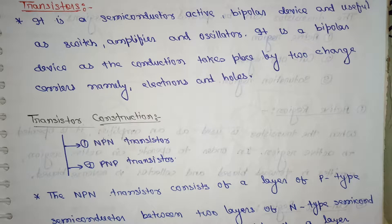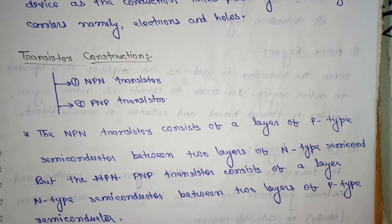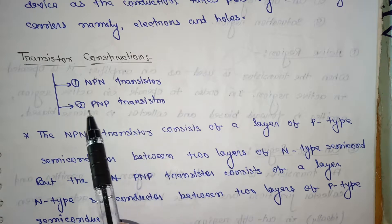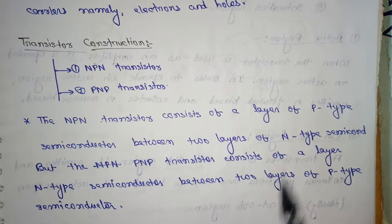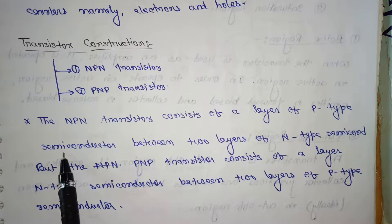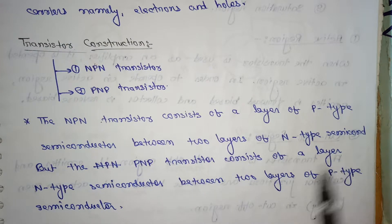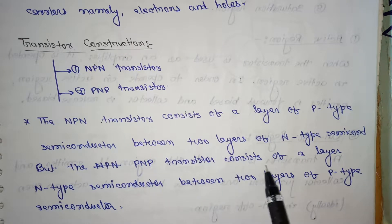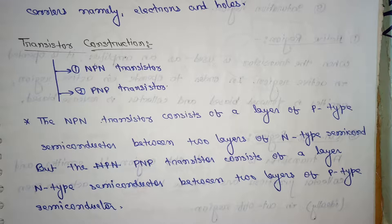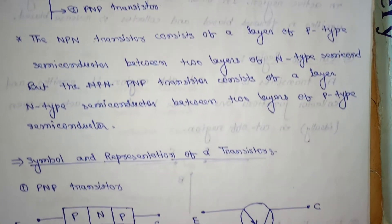It is called a bipolar device as the conduction takes place by two charge carriers, namely electrons and holes. Transistor construction: NPN transistor and PNP transistor. The NPN transistor consists of a layer of P-type semiconductor between two layers of N-type semiconductor. The PNP transistor consists of a layer of N-type semiconductor between two layers of P-type semiconductor.